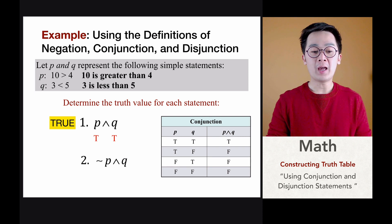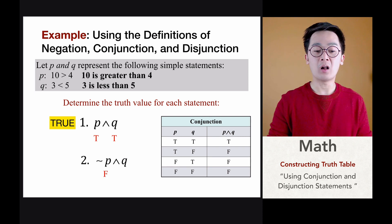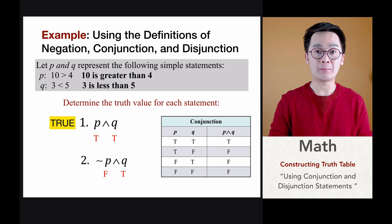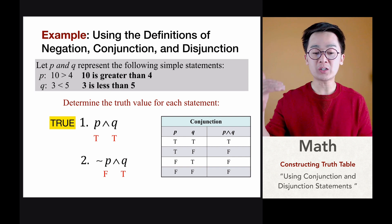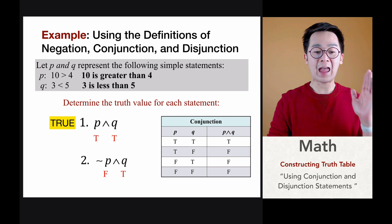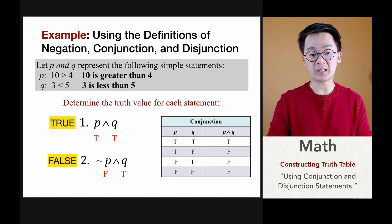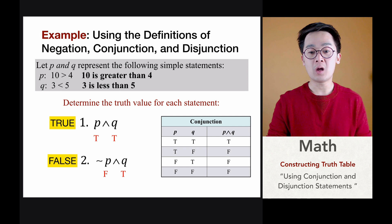For number 2, if we have not p, that means it's false. And if we have q, that means it's a true value. In our conjunction table, if we have F and T, the statement would be false. So statement number 2 would be false.